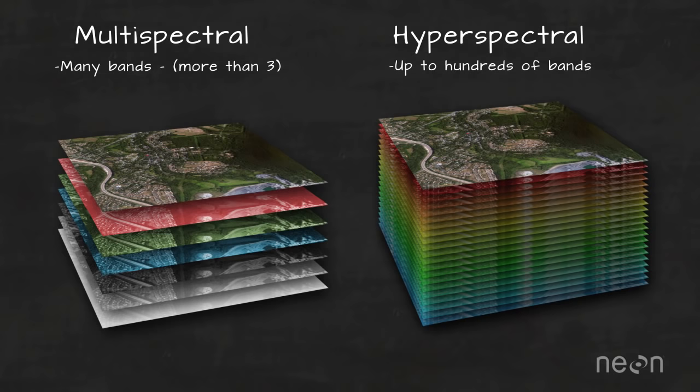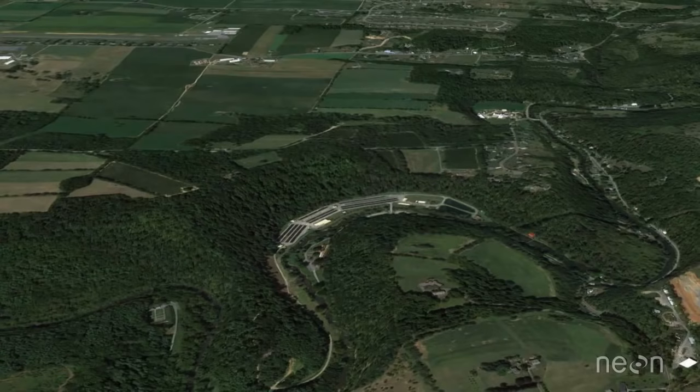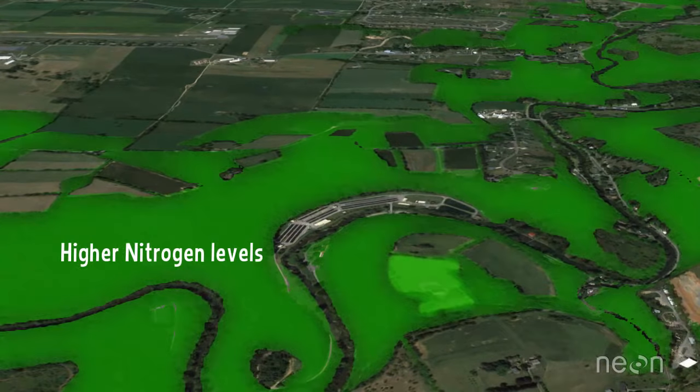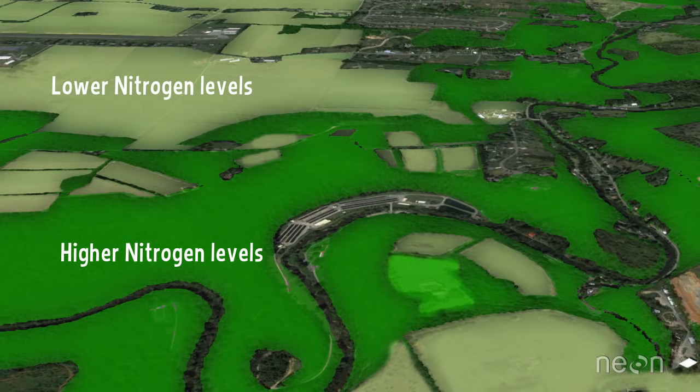We use these multi- and hyperspectral remote sensing datasets to measure light energy reflected from objects on the Earth's surface, and to estimate many physical and chemical properties of objects that we wouldn't see with our own eyes.